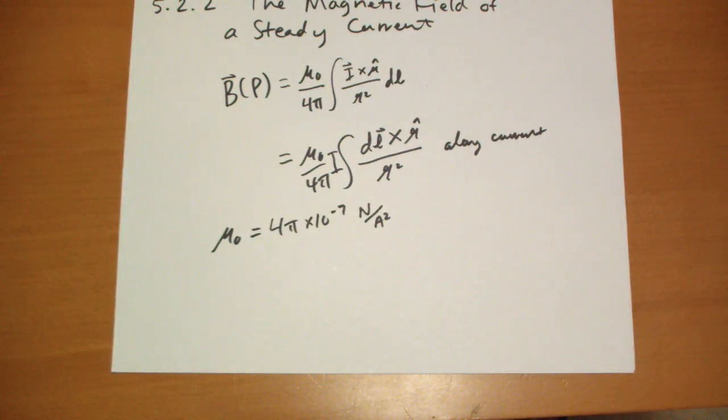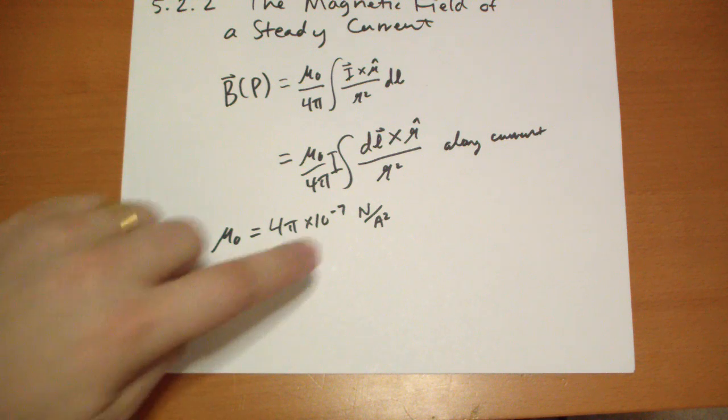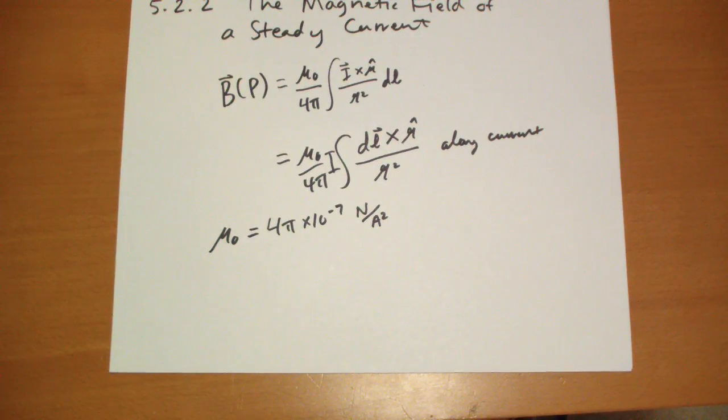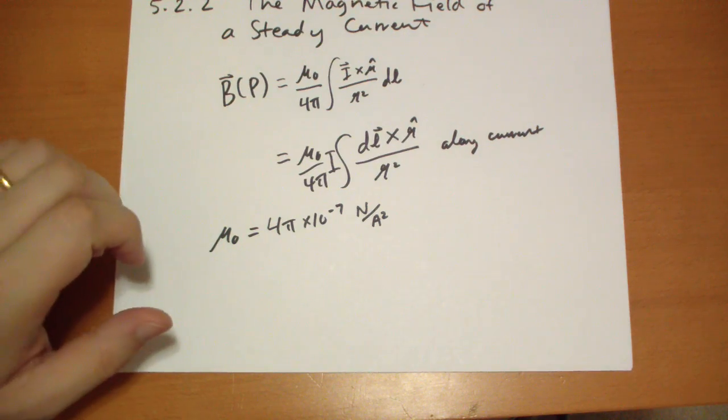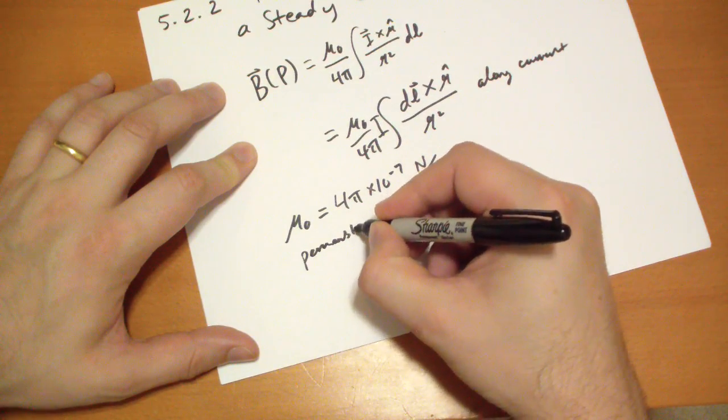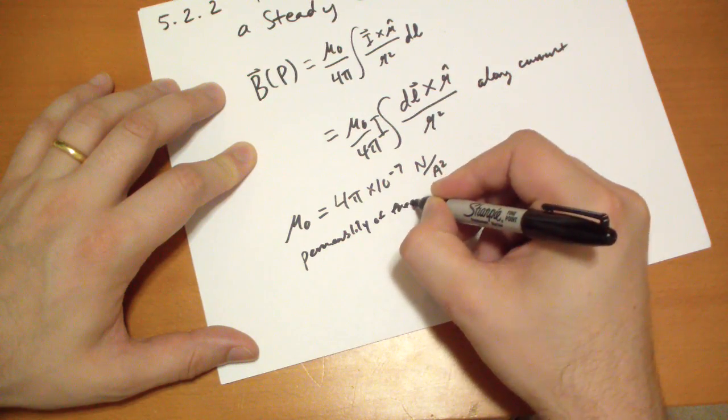And then calculate amperes and Newtons from that. Actually, amperes from that, because Newtons is given by a different calculation. So the unit of the permeability of free space...